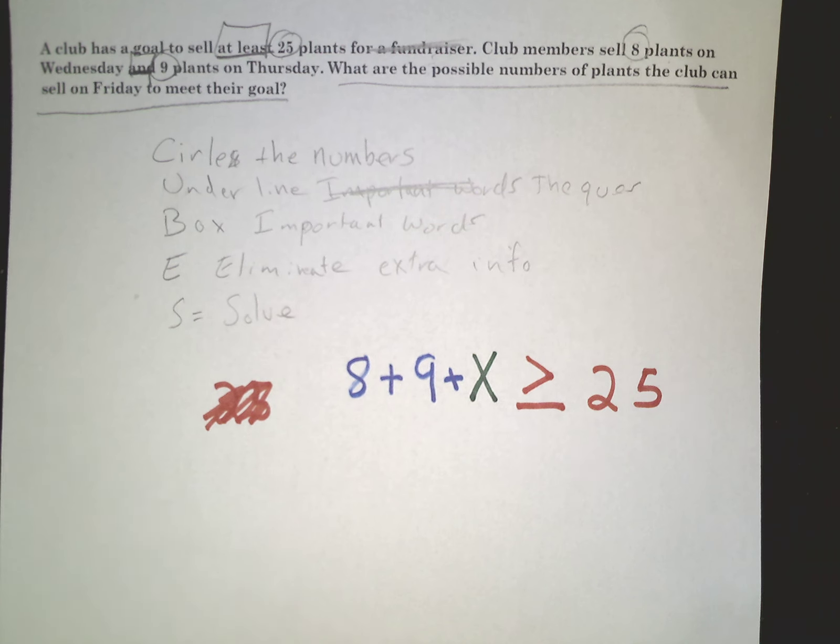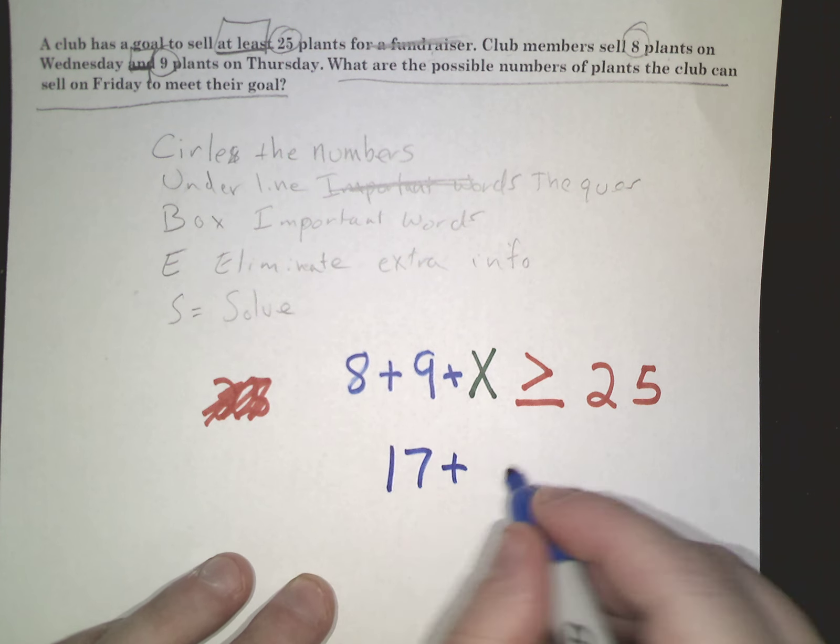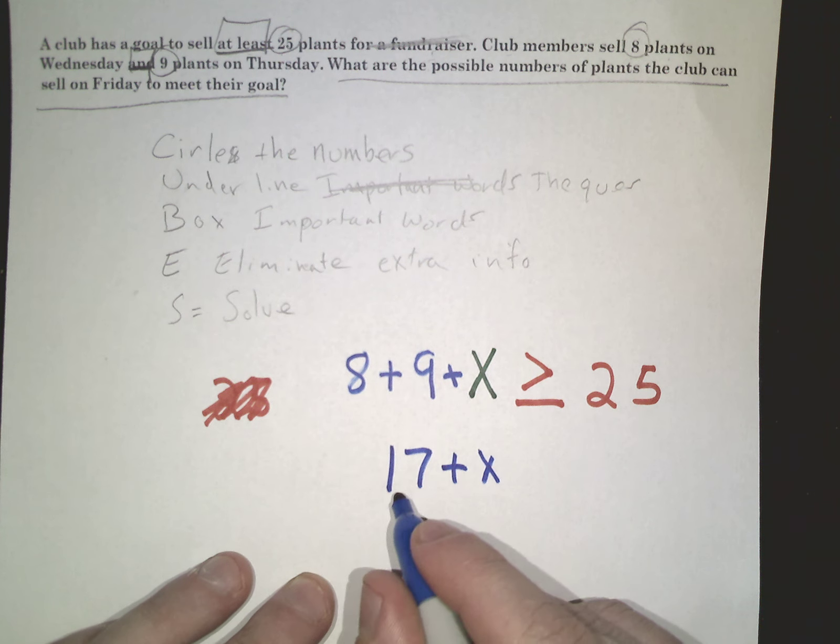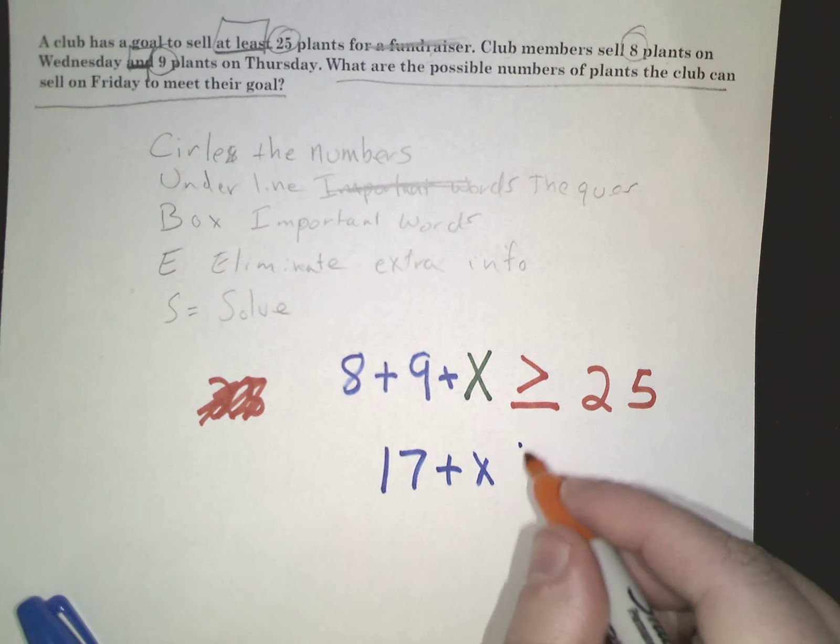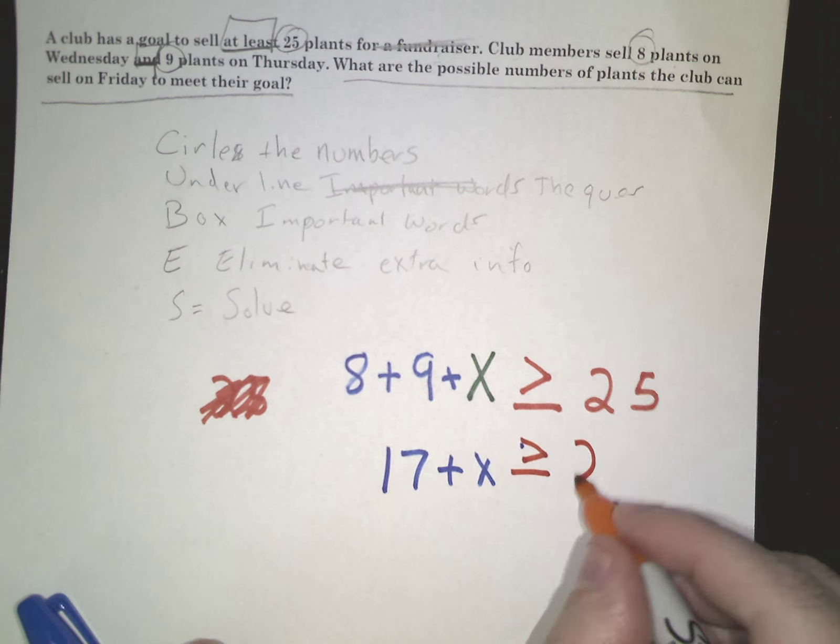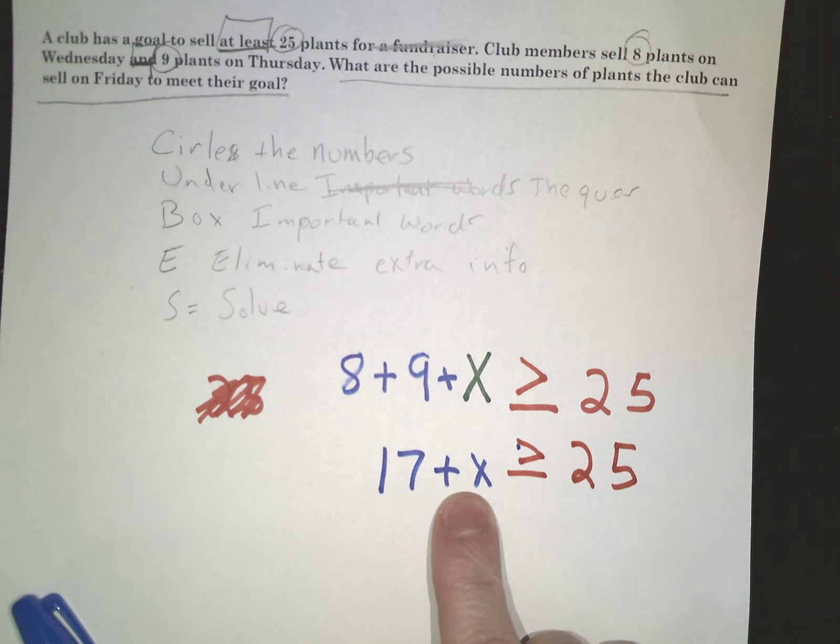Well the first thing I want to do is combine like terms. We always try to do that. 8 plus 9 is 17, plus x. So these are the ones we've already solved. Now this number is eventually going to be greater than or equal to 25 for us to be happy.